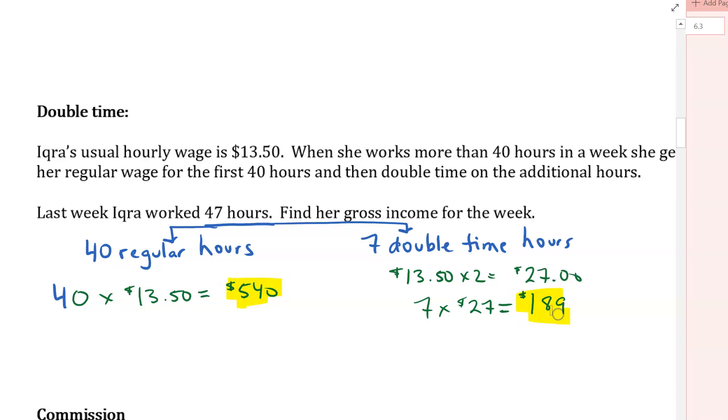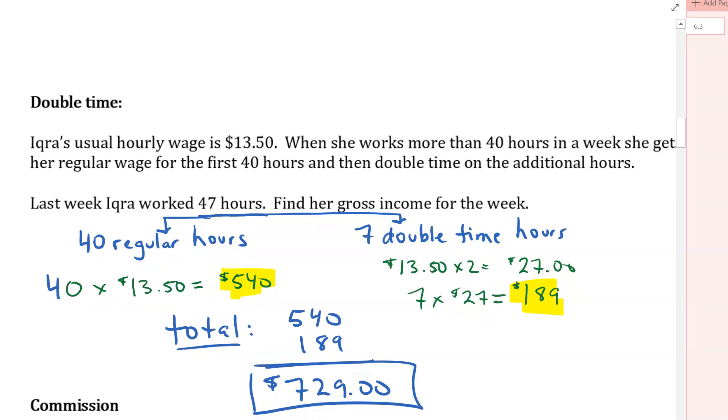So now I need to add together these two totals. So I'm going to say the total is going to be that $540 plus the $189. So she's going to get a total of $729. Put a box around my answer. Well, I hope that makes sense to you.